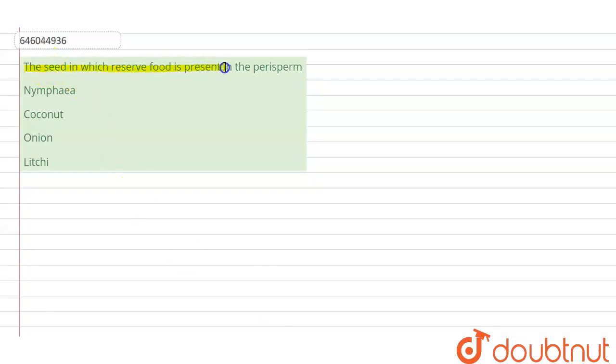the seed in which the reserved food is present in the form of perisperm is called what? So here we need to see examples and find out where the perisperm is present.